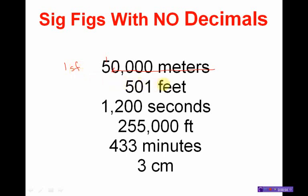The next number has no decimals either, so I'm coming in from this direction. My arrow stops when it hits a real number. In the previous problem I had zeros to go through, but on the current problem I don't have any zeros. I hit the 1 and I have to stop, and I count the numbers that remain. I count 1, 2, 3. That's right — even the zero in the middle gets counted.